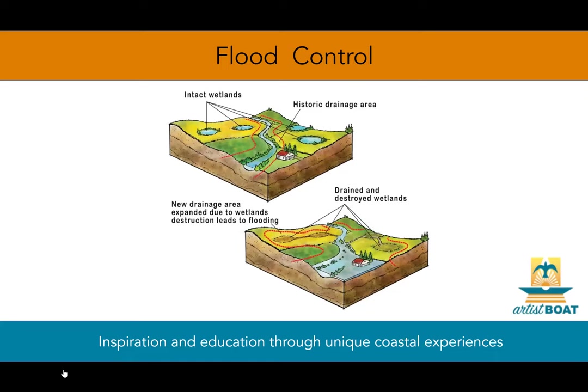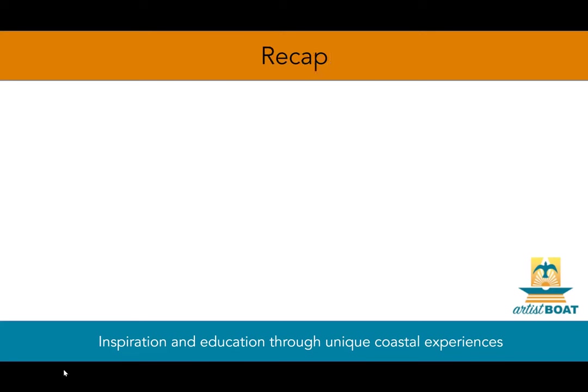Unfortunately, humans can disrupt the natural flood control ability of wetlands by building levees along rivers, digging drainage ditches through wetlands, and channelizing streams. The unfortunate consequences of these actions increase damage from floods. Along the Texas coast, wetlands help protect shorelines and inland areas from flooding during huge storms such as hurricanes.